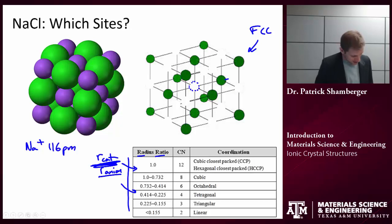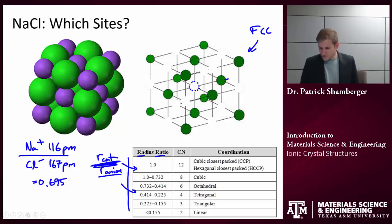For this case, sodium plus is 116 picometers, that's the radius, and chlorine anion is 167 picometers. If I look at that ratio, the cation over the anion, I get a value of 0.695. We can see that that falls within the range that's acceptable for an octahedral hole.